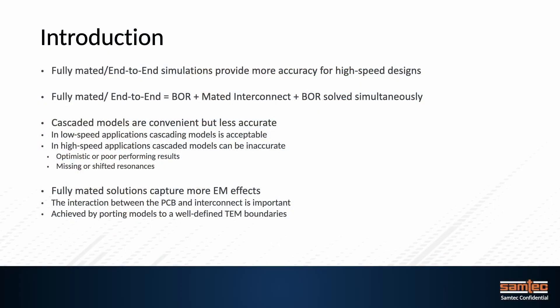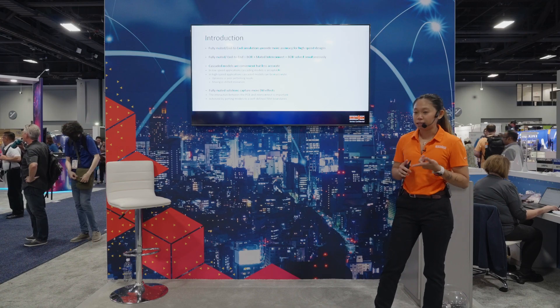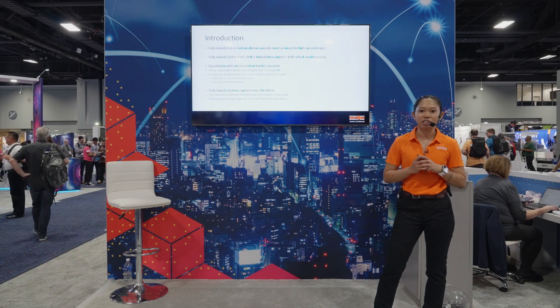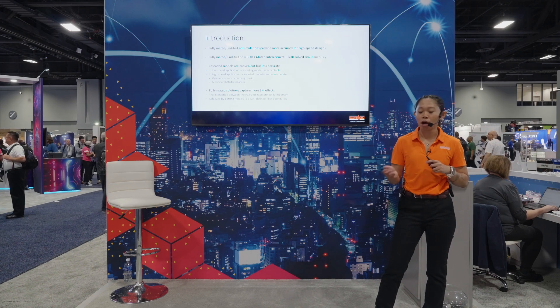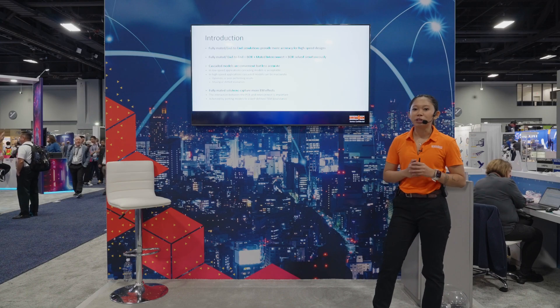In terms of modeling interconnect, there are two methodologies that we typically use. One is fully-mated or end-to-end connector simulation, which consists of two breakout regions and intermated interconnects solved simultaneously. On the other hand, we have cascaded models which consist of the same parameters, however solved independently. Cascaded models, even though used by a lot of designers, can be inaccurate — convenient but inaccurate — especially in high-speed applications such as 112 gigabits PAM4. That said, cascaded models are still acceptable in lower speed applications.